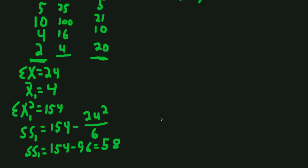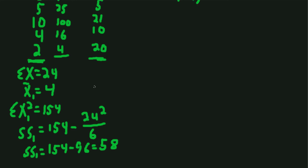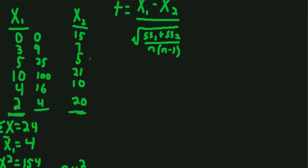For now we'll just do the same calculations for group 2. We'll take sum of X for group 2, which is 78, and we'll get the mean by dividing 78 by 6, which gives us 13.